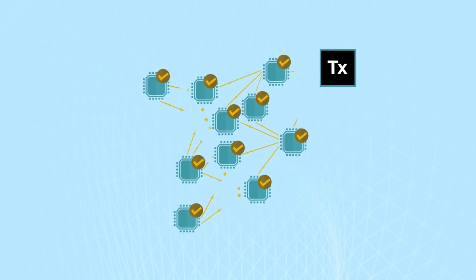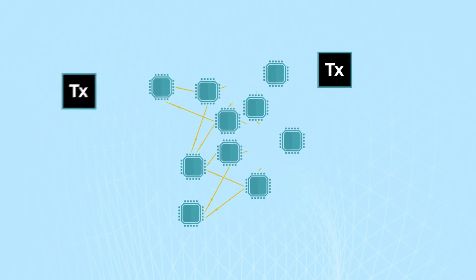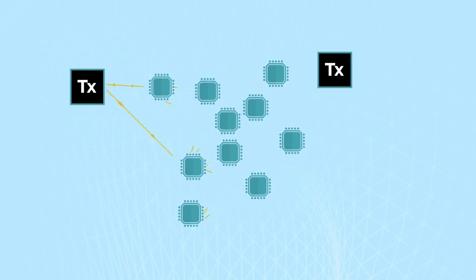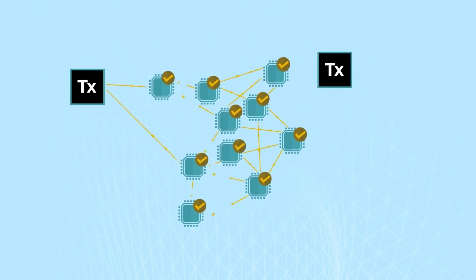Transactions must conform to the data formatting rules regarding the size of certain fields and their encoding schemas, along with the current Bitcoin transaction serialization rules. In this animation we can see nodes rejecting improperly formatted transactions.